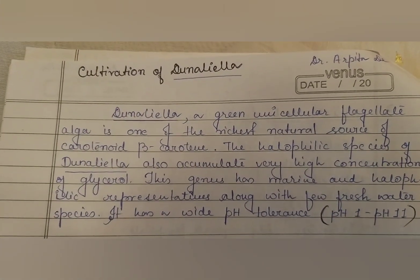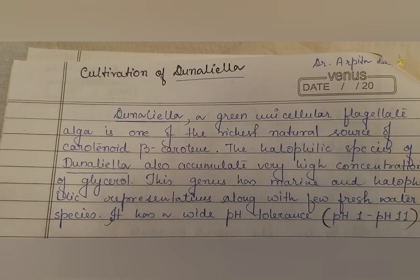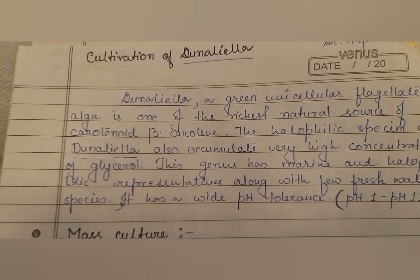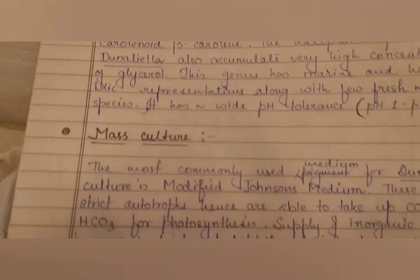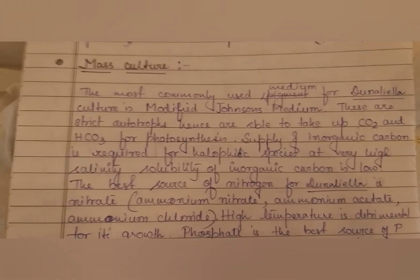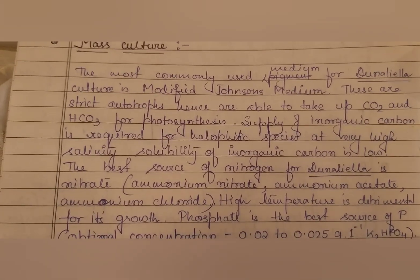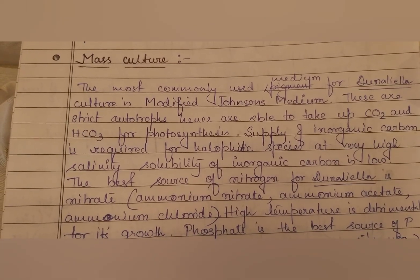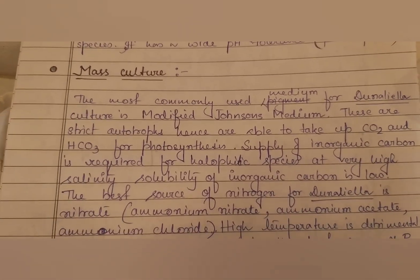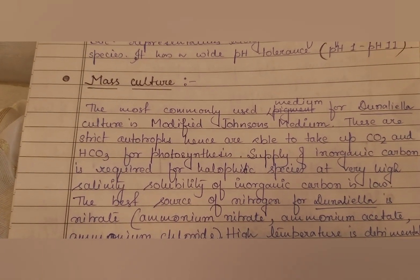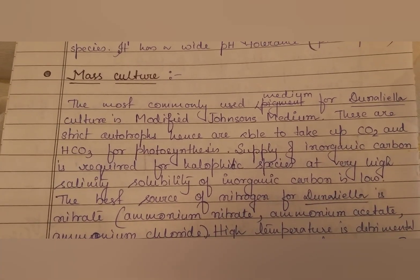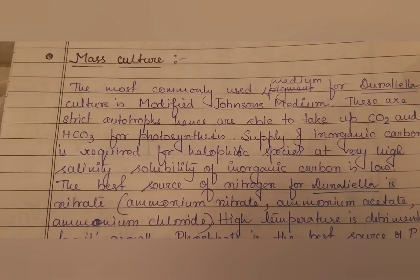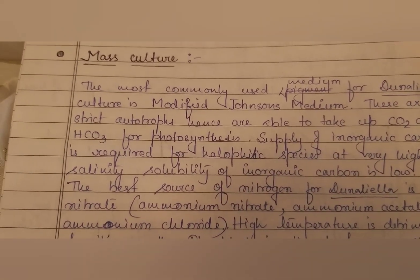Dunaliella has a very wide pH tolerance of 1 to 11 — it can survive in acidic, neutral, as well as alkaline pH. The most commonly used medium for dunaliella culture is the modified Johnson's medium. These are strict autotrophs and are able to take up carbon dioxide and HCO3⁻ for photosynthesis, which are the sources of carbon.